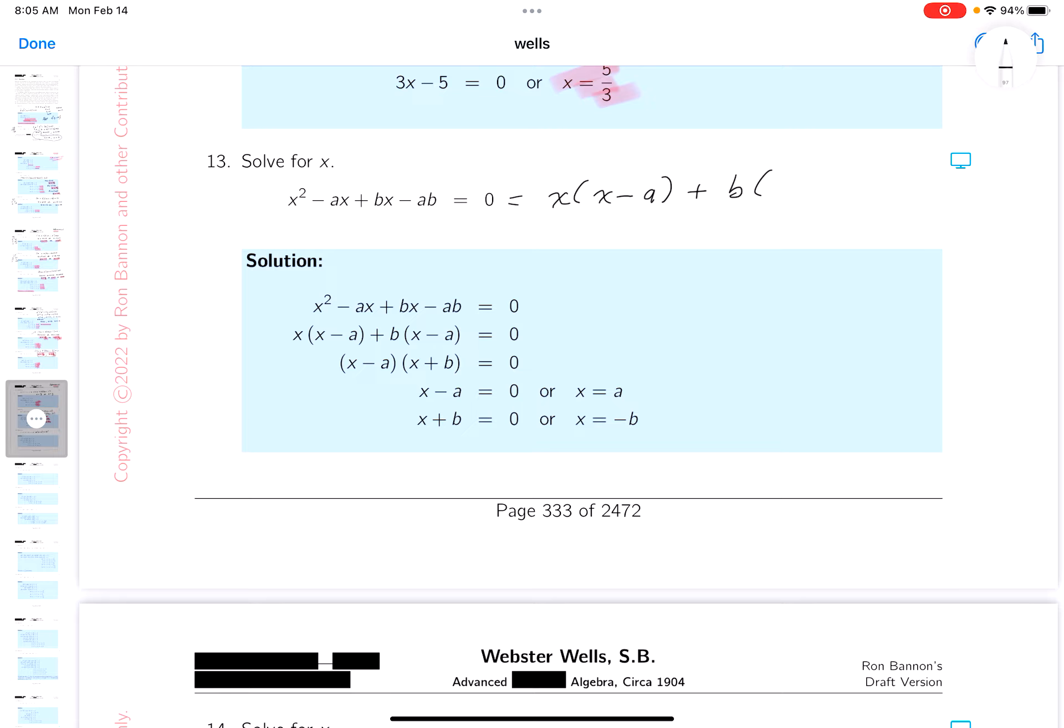Let's just check that. You do get x squared minus ax, you do get bx minus ab. This is looking good. Let's keep going. Next thing to do is factor out a common factor, which is x minus a.